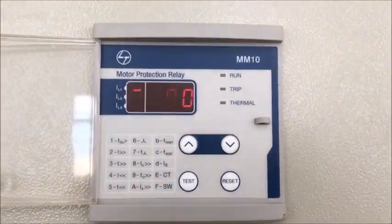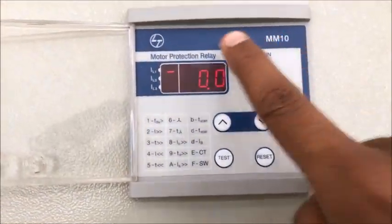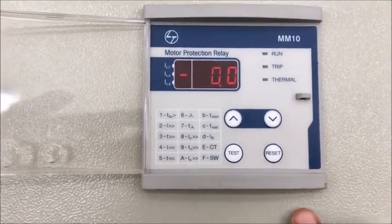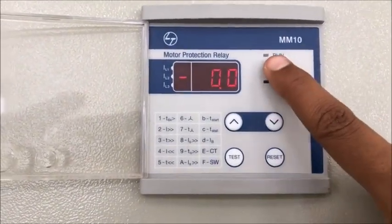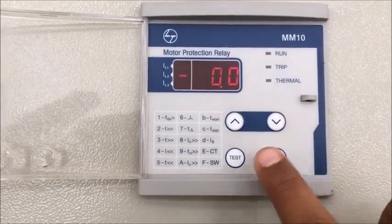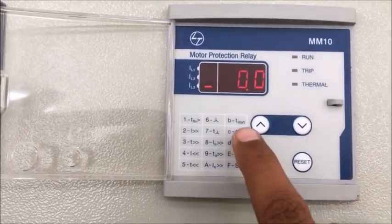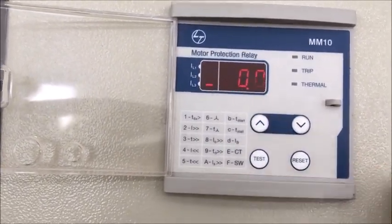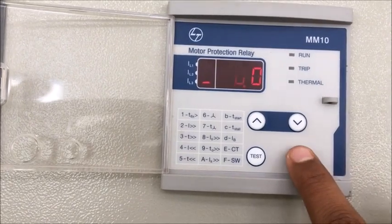Hello friends, welcome all of you on my YouTube channel Learn Tech. Today I'll show you how to set the MM10 relay which is a motor protection relay. This is the run LED, trip LED, and thermal LED, up key, down key, test and reset buttons. This is the functionality and the data LEDs over there.